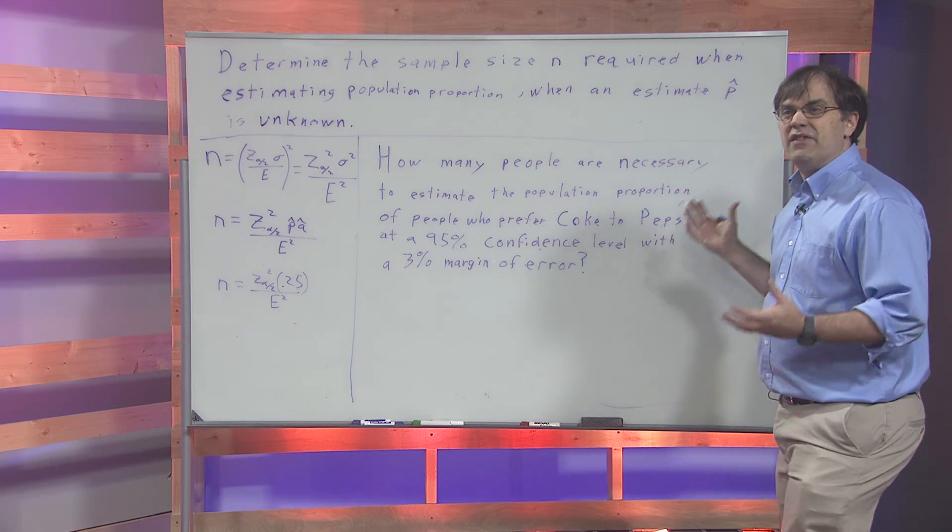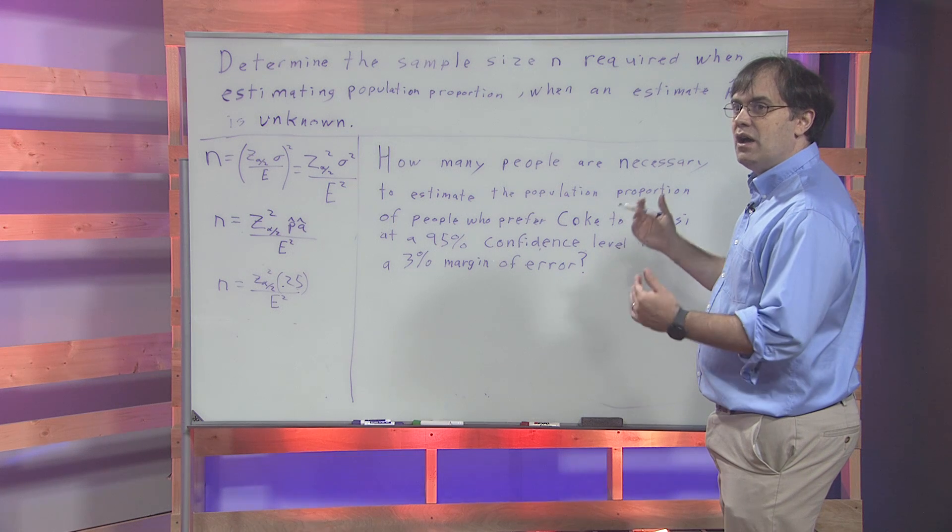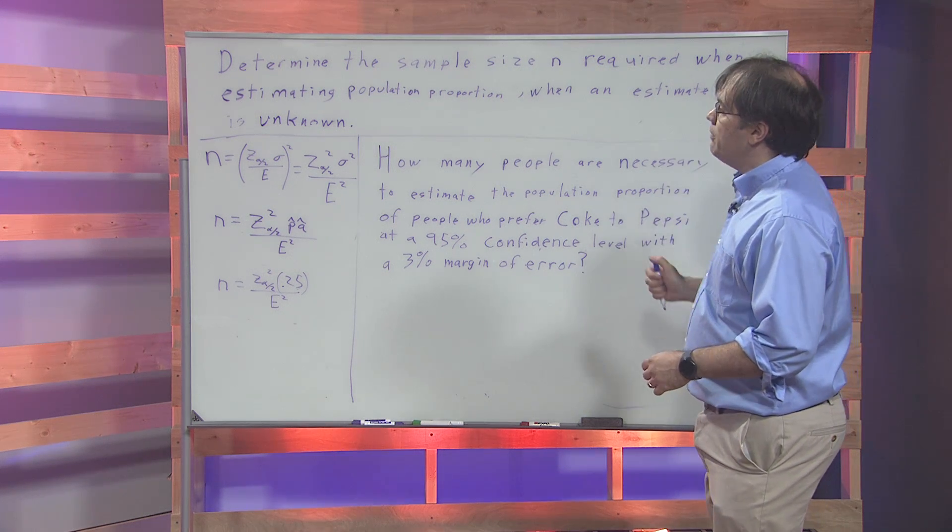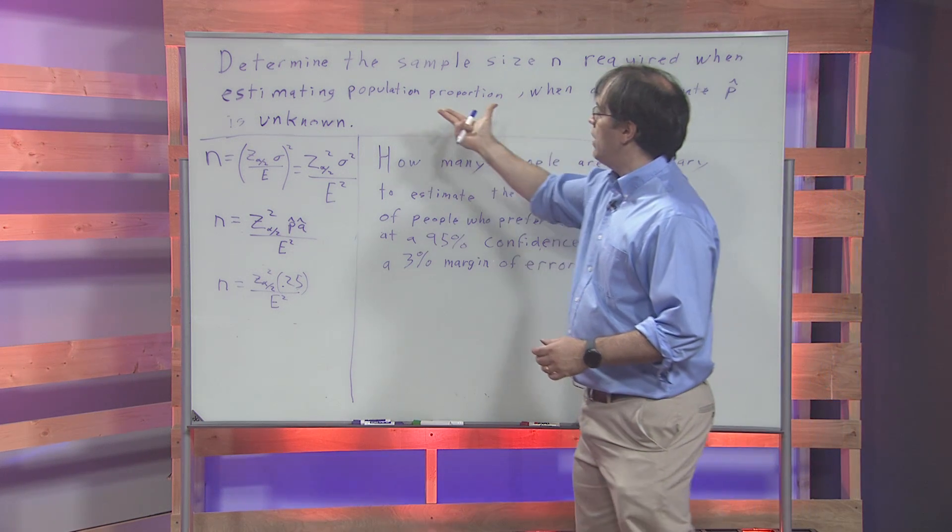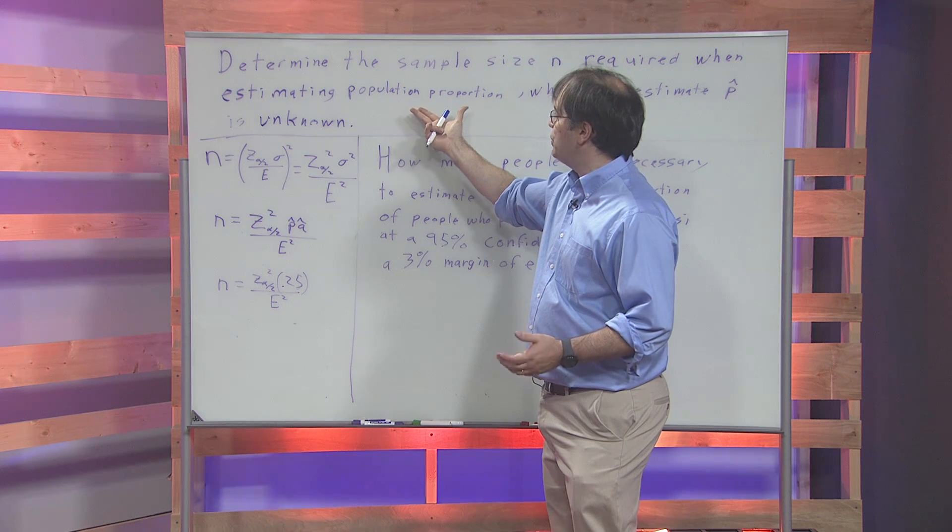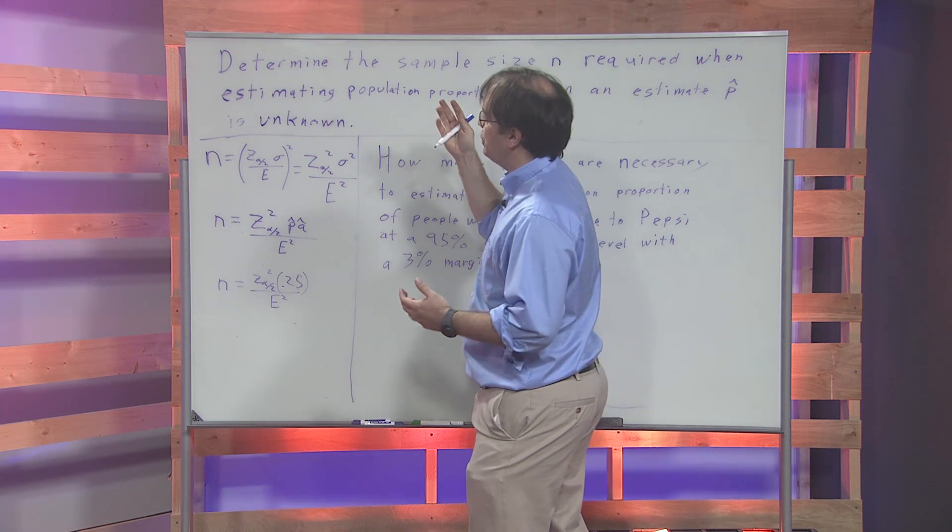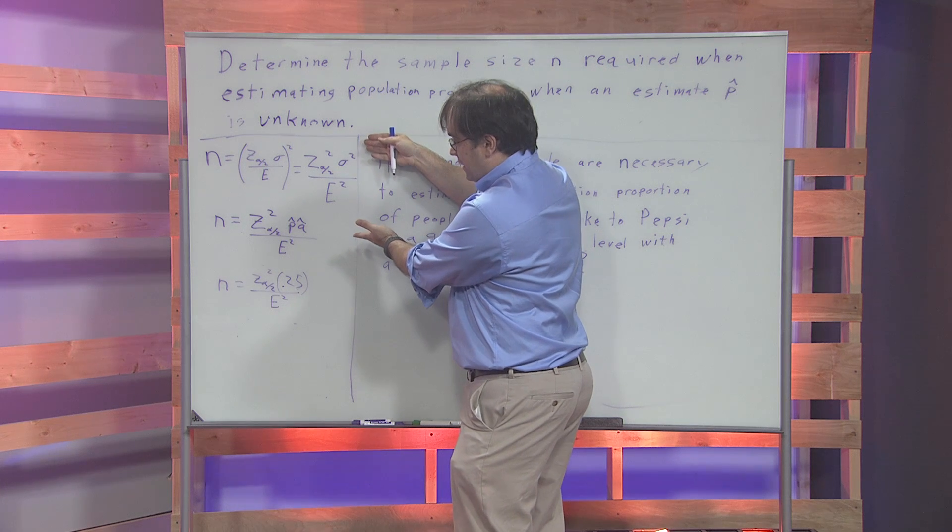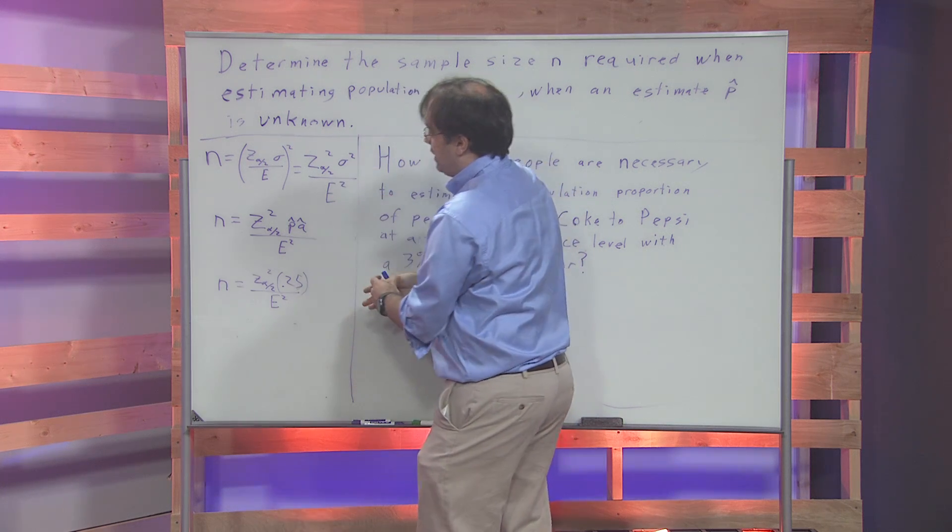In other words, we're not given any previous information about what the sample proportion is, or we don't have a previous sample proportion, we have no guess of the population proportion, and we're going to use one of these three formulas.